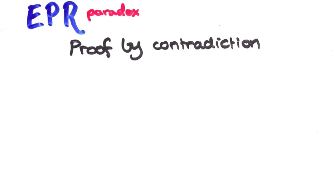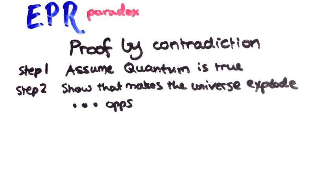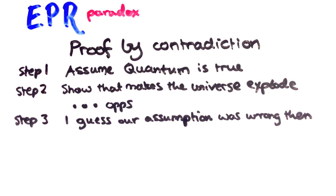Which means that you assume something, in this case that quantum mechanics is true, and then show that that would lead to something impossible happening. Therefore, the assumption must have been false all along.